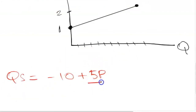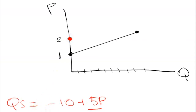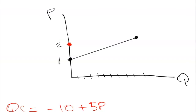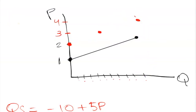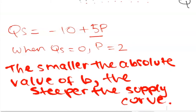What if the slope changes from 10 to 5, giving us quantity supplied equals negative 10 plus 5p? When quantity supplied equals 0, price is now 2, since 5 times 2 equals 10 and negative 10 plus 10 equals 0. The quantity supplied when price is 0 is still negative 10. So we have the point (0, 2), and with a slope of 5 the next points are (5, 3) and (10, 4). A change in slope has shifted the vertical intercept and made the second curve steeper — just as with the demand curve, the smaller the coefficient of p, the steeper the supply curve.